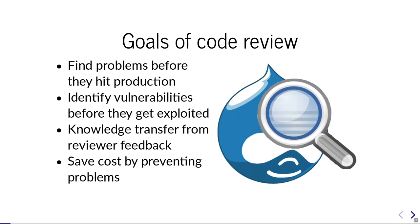What are the goals of code review? What are we trying to accomplish? We want to find problems before they hit production. Somebody is writing code, and it would be a good idea if somebody else reviews it and makes sure nothing bad is in there. That way we can prevent security vulnerabilities before they are exploited — we are in the prevention phase of the security process.